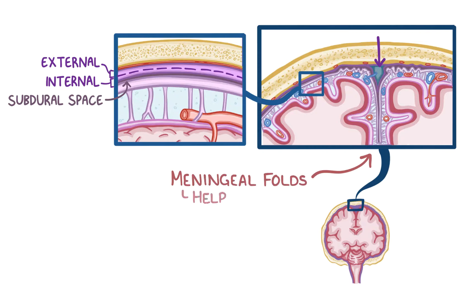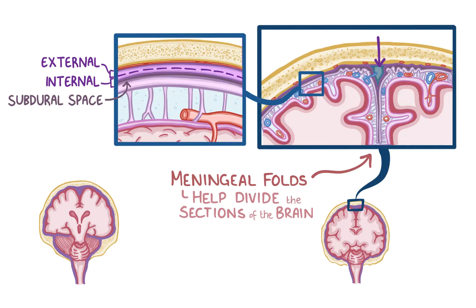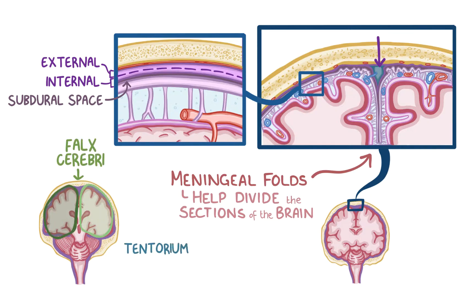The meningeal folds help divide sections of the brain, like the falx cerebri, which separates the two hemispheres of the cerebrum, and the tentorium, which covers the cerebellum and separates it from the cerebrum. Between the external layer of the dura mater and the inner surface of the skull, there are arteries that supply the meninges.